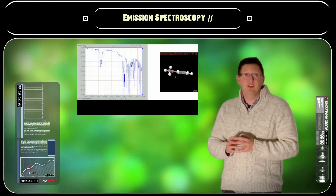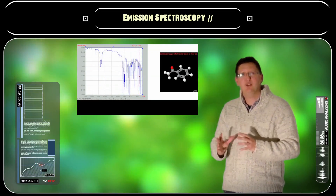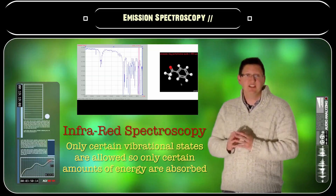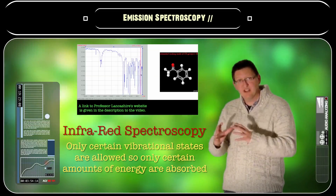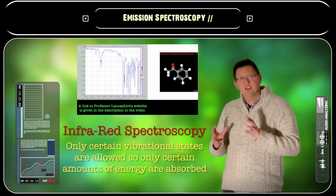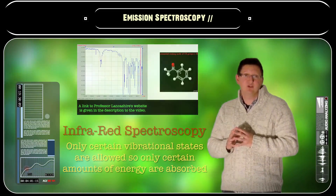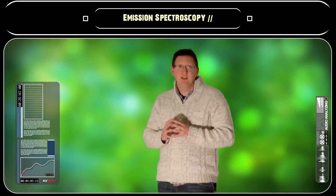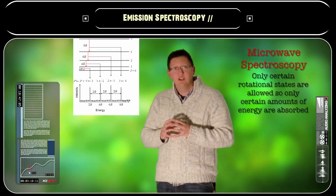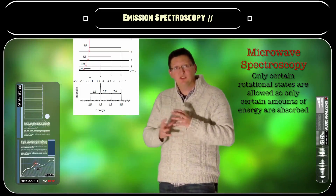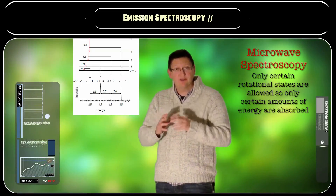Infrared spectroscopy deals with the infrared part of the electromagnetic spectrum. It looks at how molecules absorb infrared light — which we can't see — and molecules do this by vibrating. It turns out that they can only absorb certain frequencies in the vibrational spectrum. Similarly, when molecules absorb microwave radiation, they absorb certain frequencies based on how they rotate.